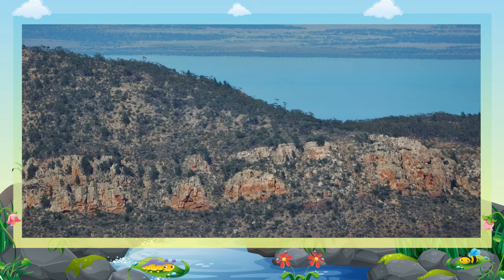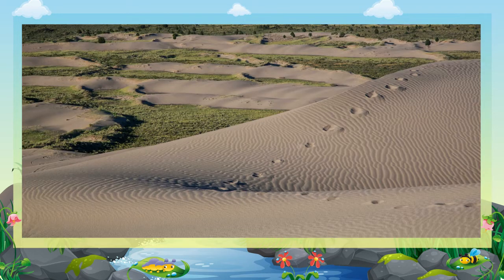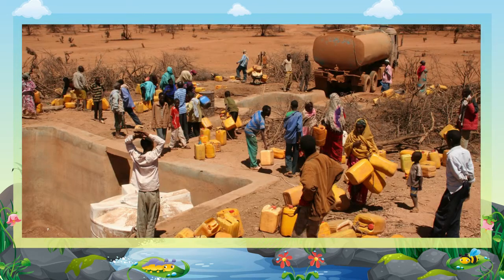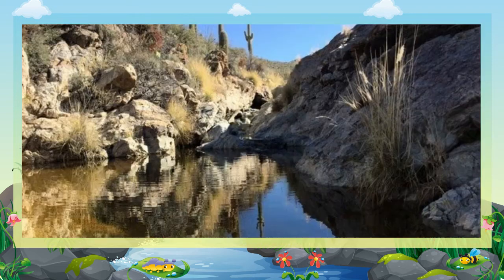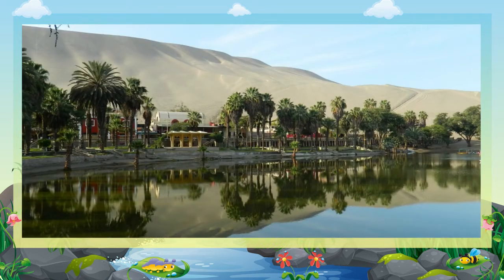Saudi Arabia's rocky plateau is a part of the Arabian Peninsula. There are sand dunes in Saudi Arabia which can move from one place to another due to winds. There is always a shortage of water because of the absence of rivers and lakes.